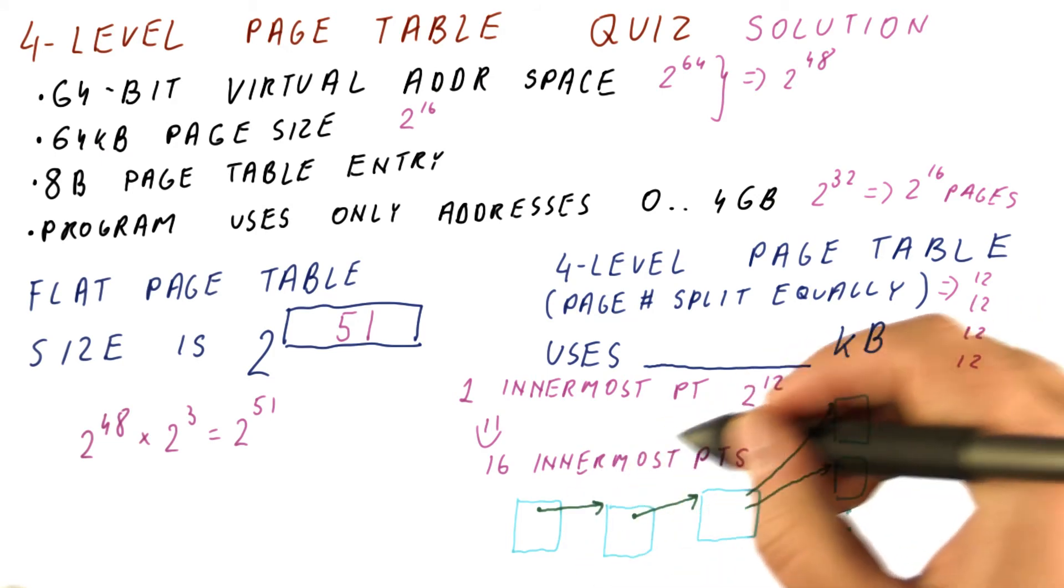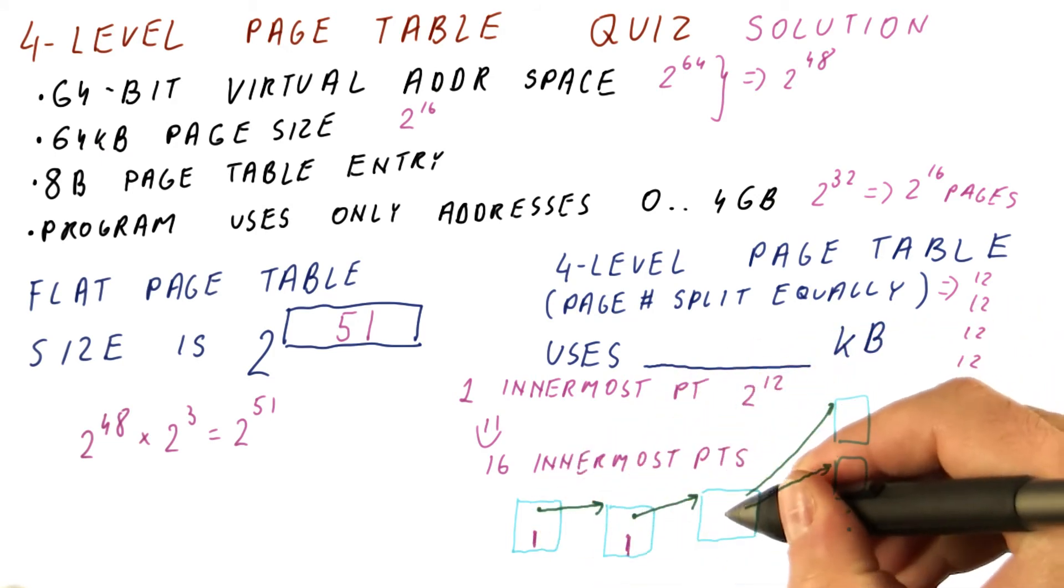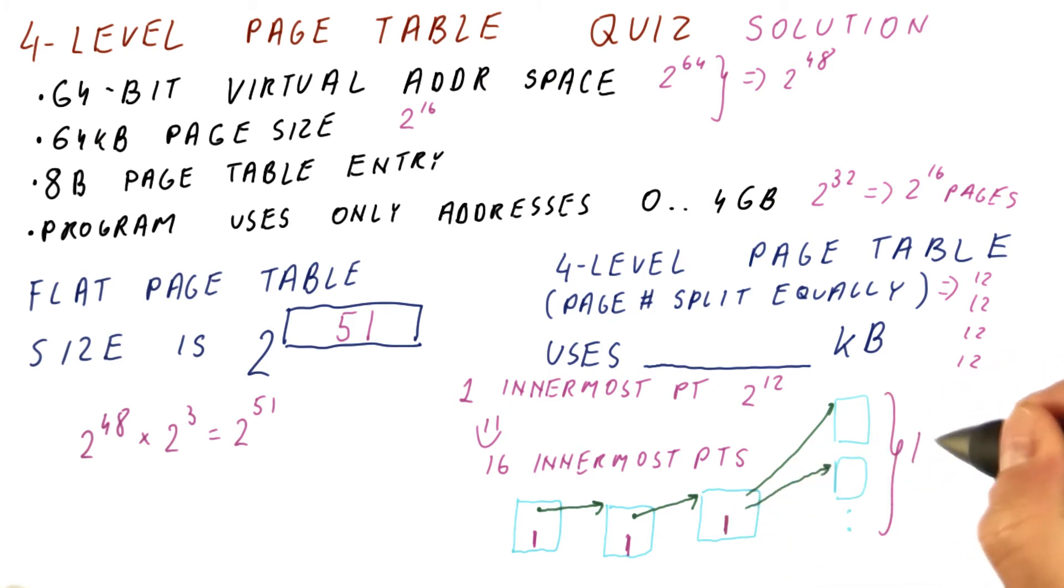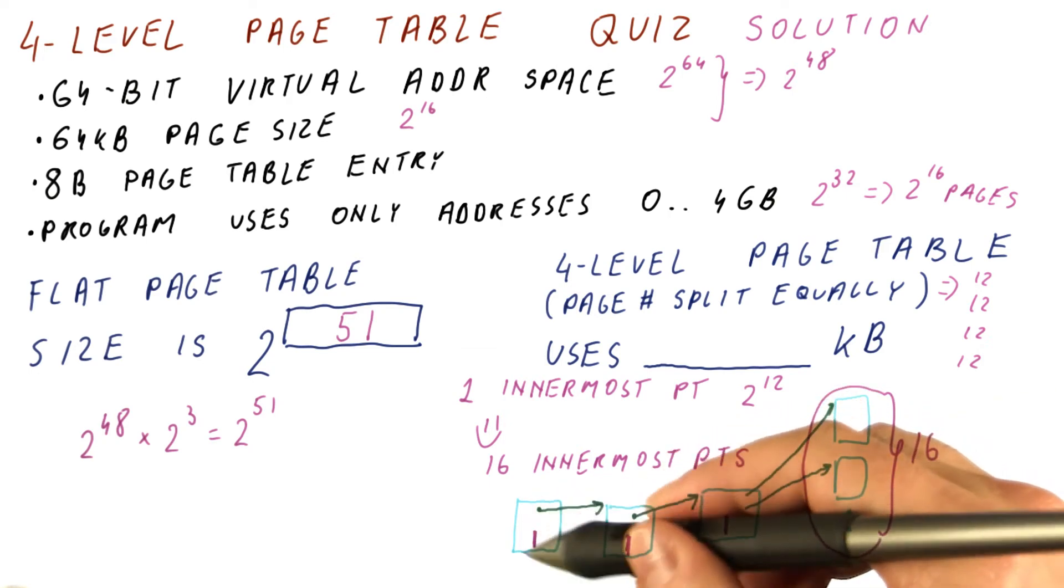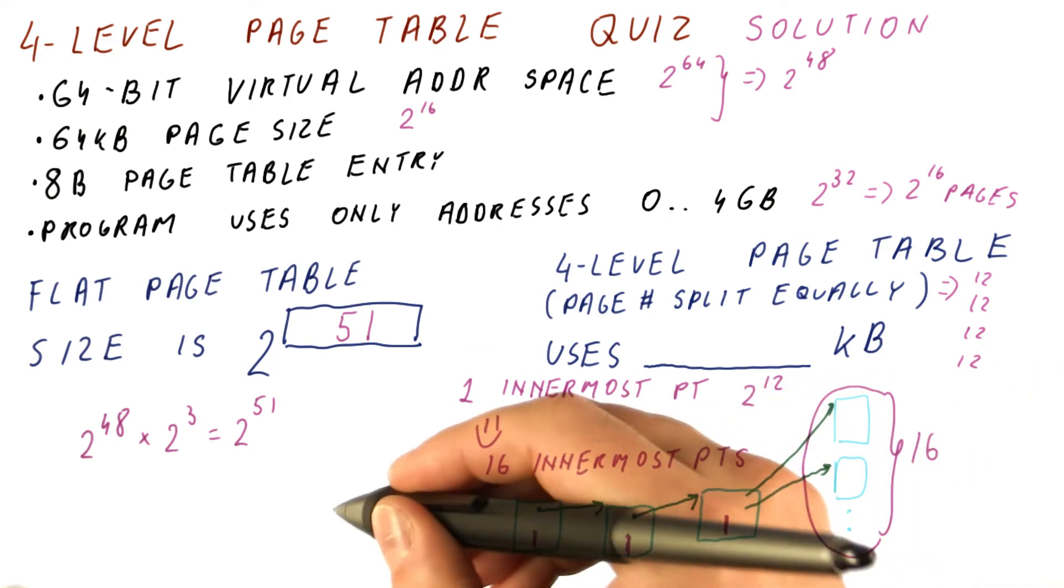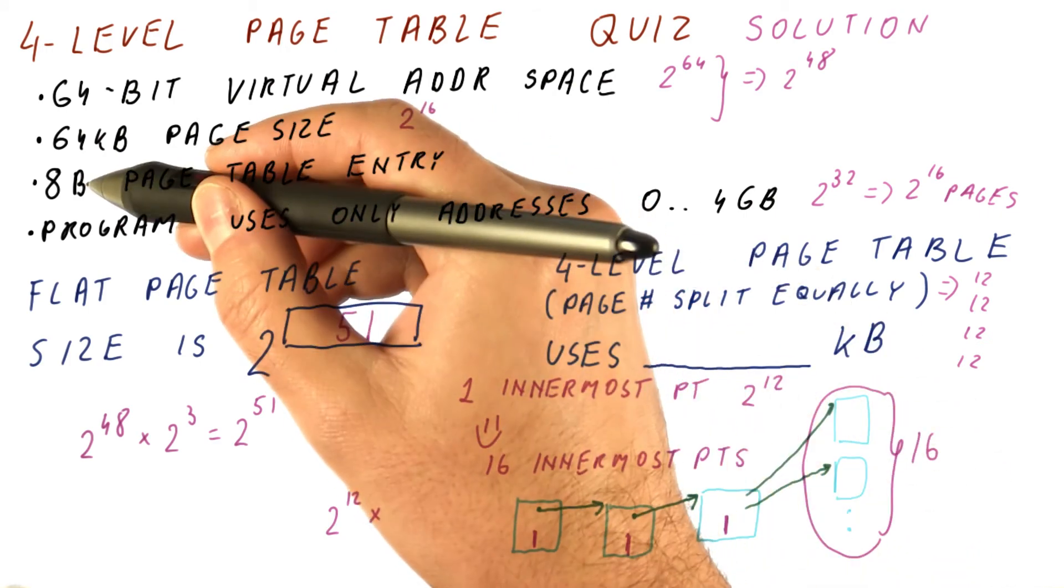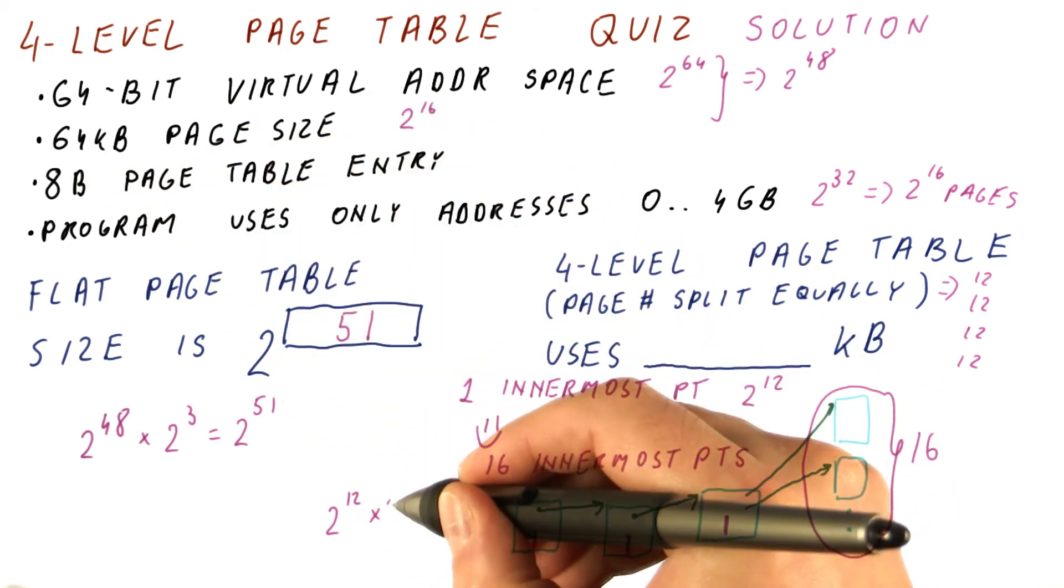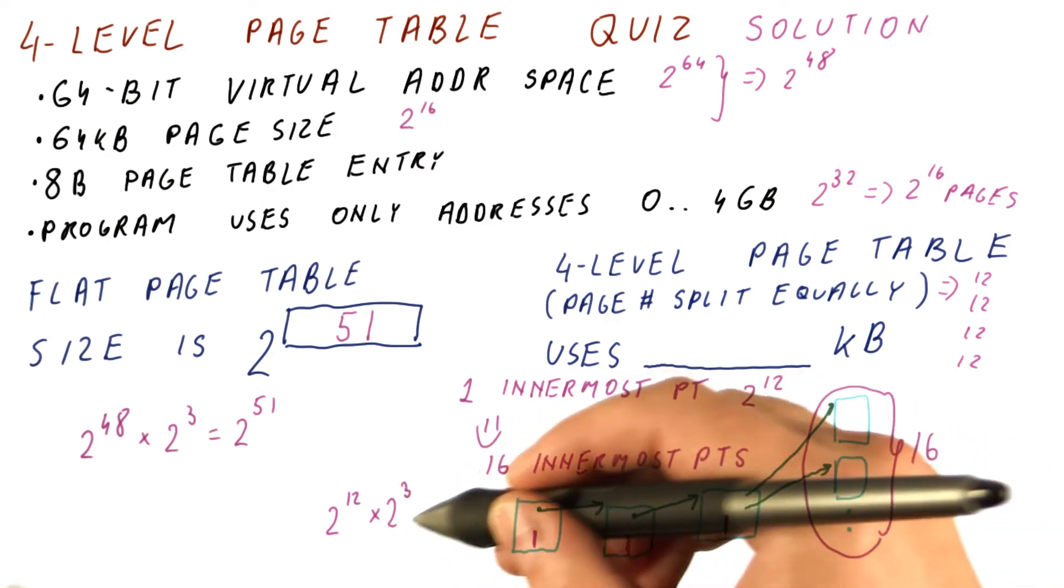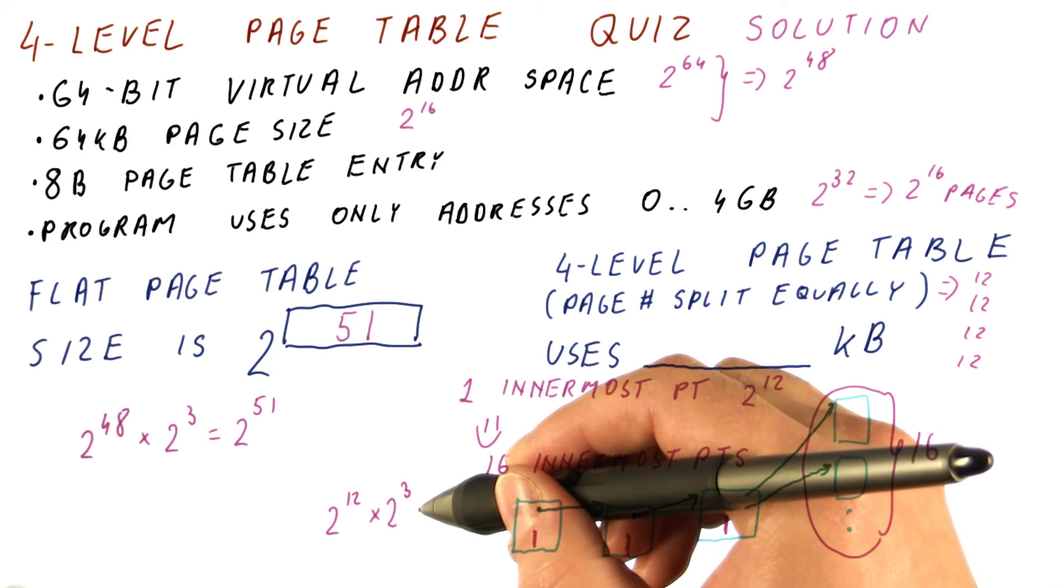So overall, the number of these page tables is 1 here, 1 here, 1 here, and 16 of these for a total of 19 of them. The size of each of these small page tables is the number of entries, 2 to the 12th, times the size of an entry, 2 to the third. So the size of each one of these is 2 to the 15th bytes, which corresponds to 32 kilobytes.